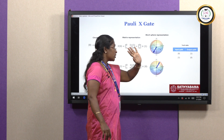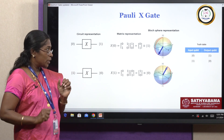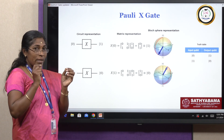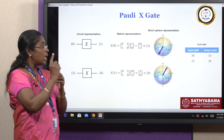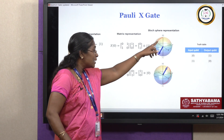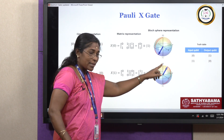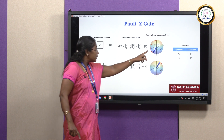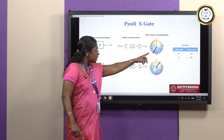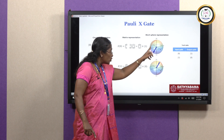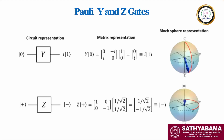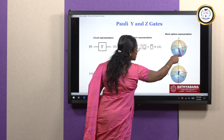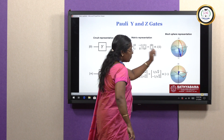The Bloch sphere representation comes into the picture because an electron's spinning rotation is based on three axes — X axis, Y axis, and Z axis. In the Pauli X gate, the information spins from the X axis from 0 to 1 as well as from 1 to 0. The same working principle of Pauli X is followed in Pauli Y and Pauli Z gates, but the rotation is along the Y axis and Z axis respectively, each by pi radians.